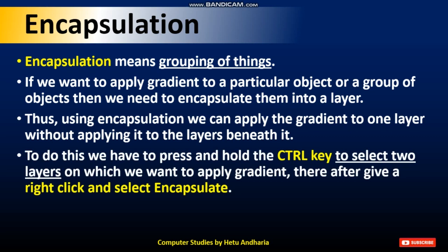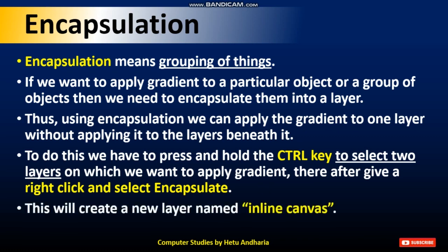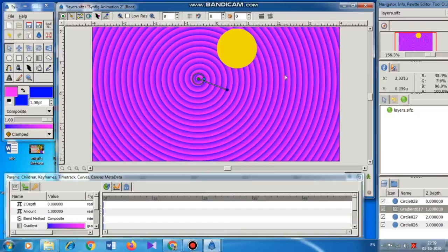To encapsulate, press and hold the Control key — this could be asked in the MCQ. Press and hold the Control key to select the two layers on which you want to apply the gradient, then right-click and select encapsulate. One more important thing: by doing this, it will create a new layer named inline canvas — this could also be asked in the MCQ. A new layer is created and that is known as inline canvas.